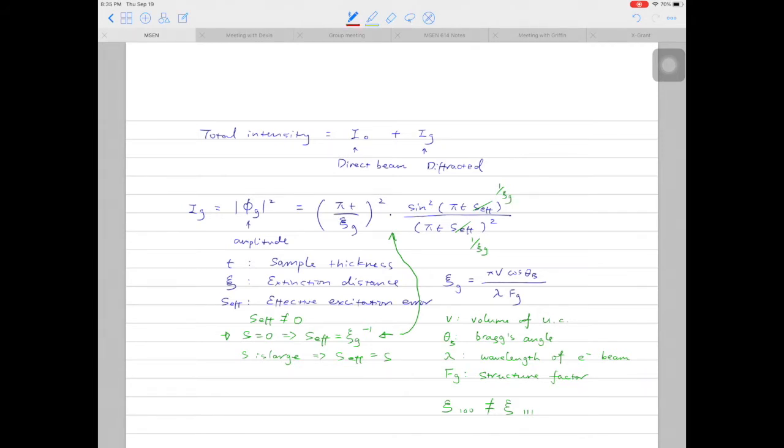In this case, the term here is exactly the same as the term down here in the denominator. So they can simply cancel out. We can thus simplify the equation as sine square pi t over ccg.